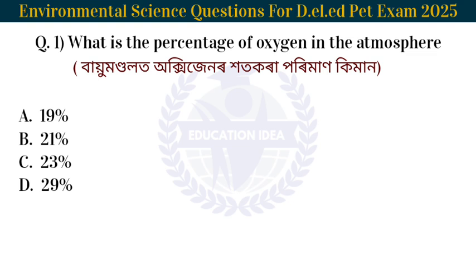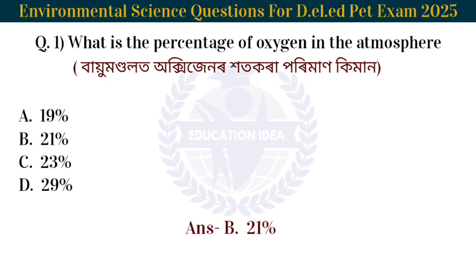First question: What is the percentage of oxygen in the atmosphere? Biomondolot oxygen hoot kora poryman ki maan? The answer is 21%. Option: the percentage of oxygen in the atmosphere is 21%.